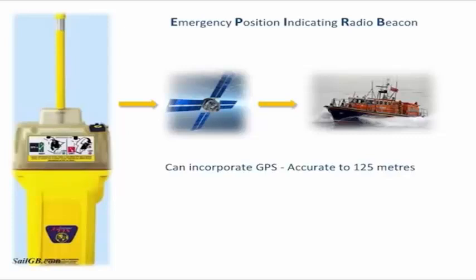Each EPIRB has a unique number, which should be registered. In the UK, this is done with HM Coast Guard at Falmouth. If an EPIRB is accidentally activated, don't turn it off until the Coast Guard has been informed. If the signal suddenly disappears, they will assume you have sunk.